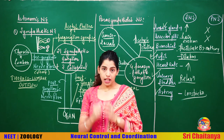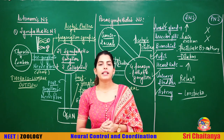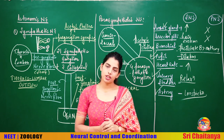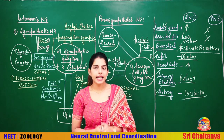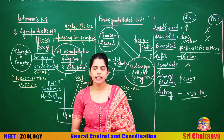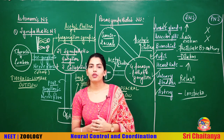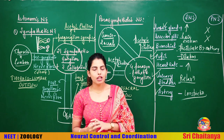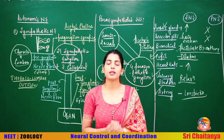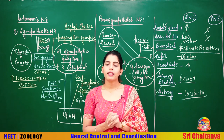We are done with the autonomic nervous system and the major portion of the chapter. We are left with sensory organs like the eye and ear, which we will discuss in the next class. While revising, make sure to revise these parts and also from NCERT. We are going to be back soon with sensory receptors — till then, take care, stay happy, stay safe, stay home. Bye bye.